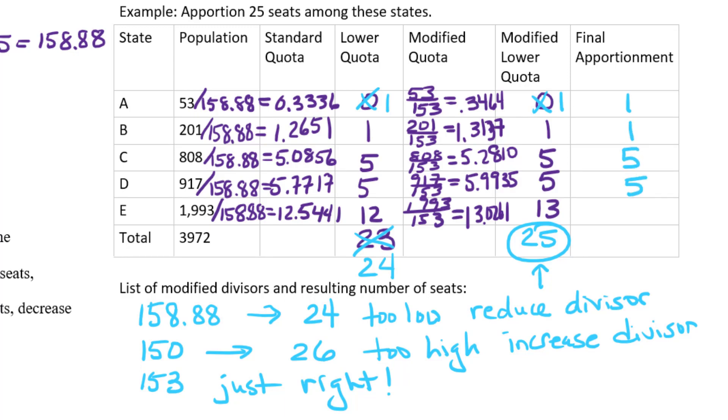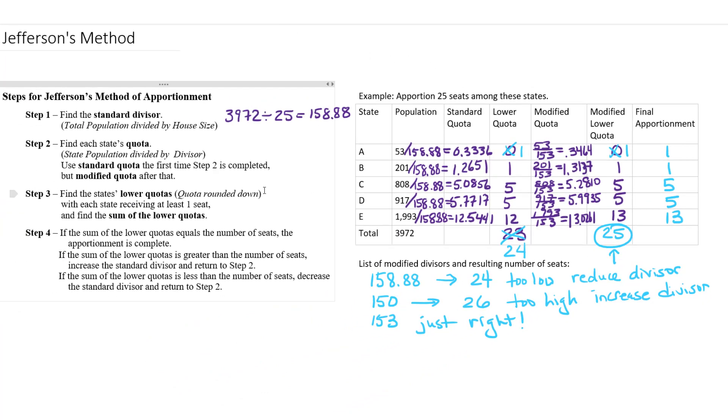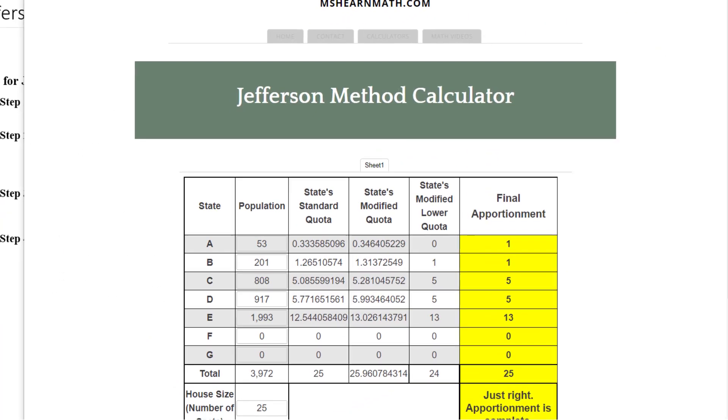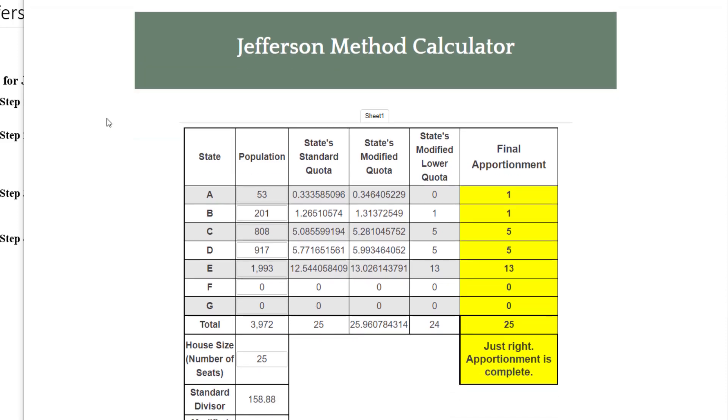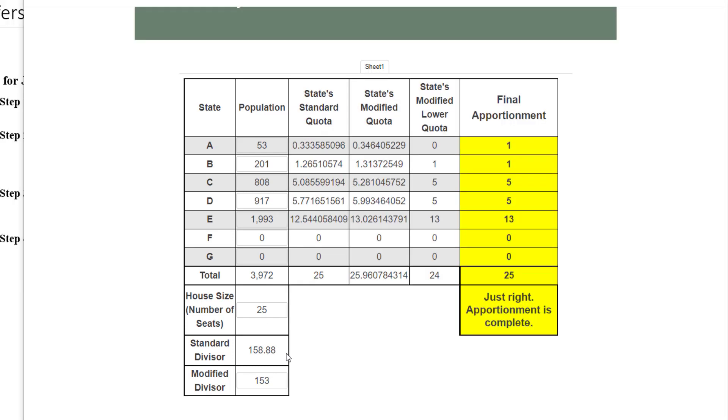So our final apportionment is 1, 1, 5, 5, and 13. We can also check our work by going to my website, MsHearnMath.com, where I have a Jefferson Method calculator. We enter the populations of the states, and we enter the house size, and it tells us automatically the standard divisor.